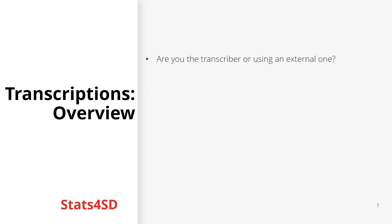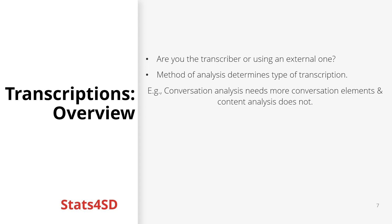As we will see later, we will make different choices based on whether we are the transcriber or someone else is. The method of analysis that we will use will influence the choices we make about the type of transcription we choose. For instance, if you use conversation analysis, you will need more detailed transcription on elements of conversation. Whereas if you use content analysis, those details will matter less because you will be more focused on the themes and meanings contained within the interaction.